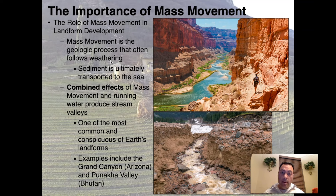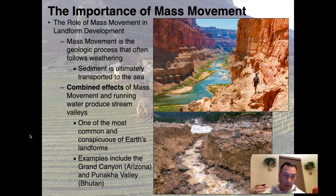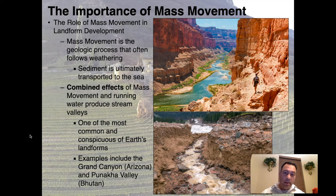The combined effects of mass movement and running water tend to produce stream valleys, which are the most common and conspicuous landforms on Earth. When people think about the continents, they think of those beautiful rivers cutting across them, transporting water, silt, sediment, and all the biota, flora, and fauna that come with it. Classic examples of landslide-created landscapes include the Grand Canyon in Arizona and the Panaca Valley of Bhutan.